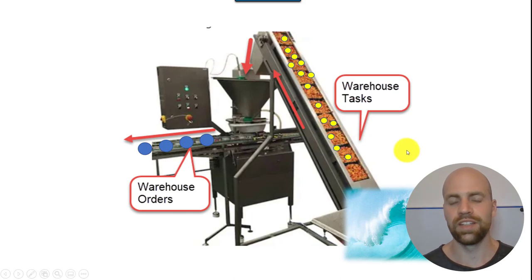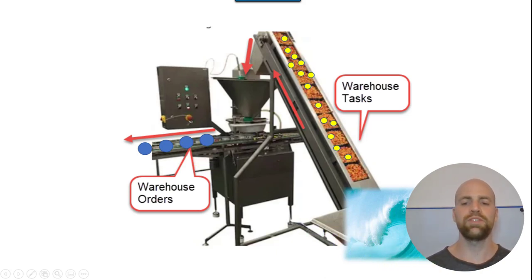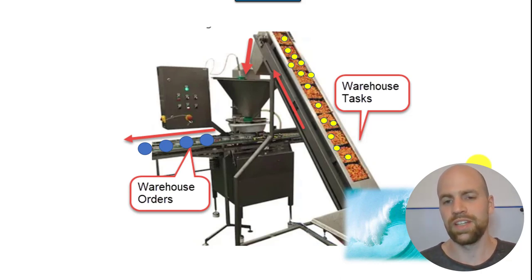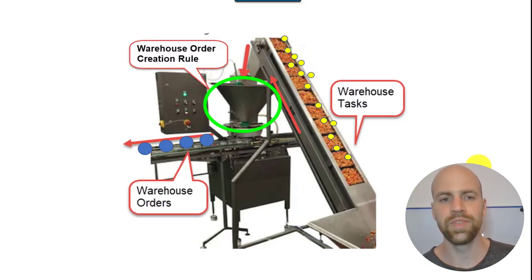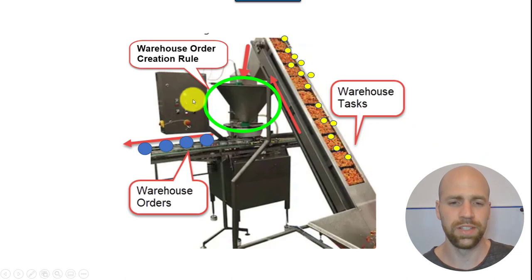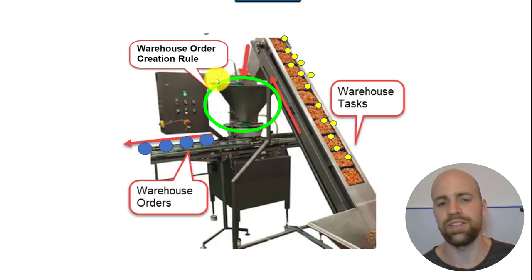Warehouse orders are basically packages of warehouse tasks. This conversion — the creation of warehouse orders — is happening, for example, during wave release, but it also happens if you create warehouse tasks in a different context, like simply against one outbound delivery order. In between this filling system we have our funnel, and that's the warehouse order creation rule. It's a very simple comparison, but I think it explains the basic concept pretty well.